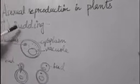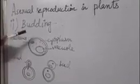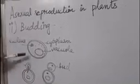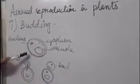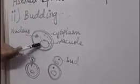Next, asexual reproduction in plants, different ways is budding. Now this budding is commonly found in yeast. So here I have drawn the diagram of yeast cell. You can see the cytoplasm along with nucleus and vacuole.